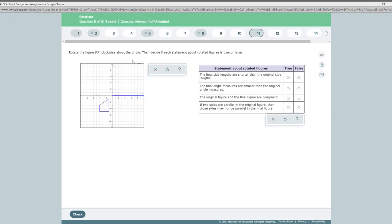So when you do some of these rotations like this one, you're going to rotate at a 90 degree clockwise about the origin. Clockwise is this way, so that's a 90 degree clockwise rotation. Now we ask ourselves, is the final side length shorter than the original? No, that's a false statement. The final angle measures are smaller than the original angle measures. That's a false statement.